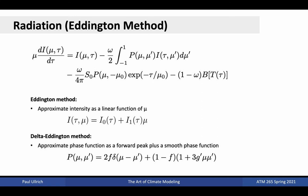Further simplifications are often introduced to this equation so as to separate the intensity function, which is nominally a function of both mu and tau, into only a few functions of tau alone. The Eddington method, for instance, assumes that the intensity is linear in mu, and so can be written as the sum of i-naught and i-one times mu. This is also known as the two-stream approximation, since we can interpret the intensity as consisting of an upwelling and downwelling intensity. The delta-Eddington method further simplifies the equation by approximating the phase function as a combination of a delta function and a smooth phase function over all other angles. This indicates that the photon will scatter forward with probability f and at other angles with probability 1-f.